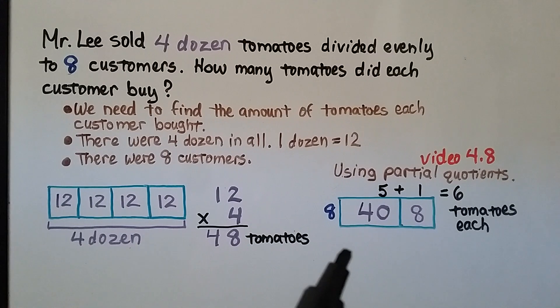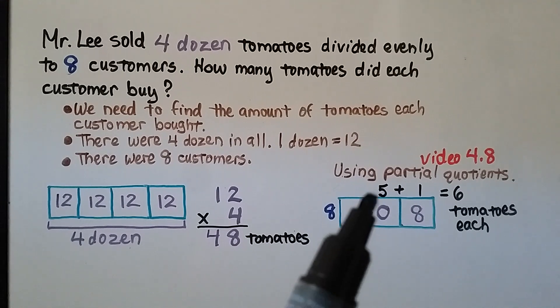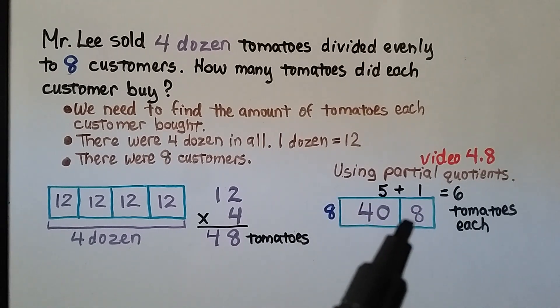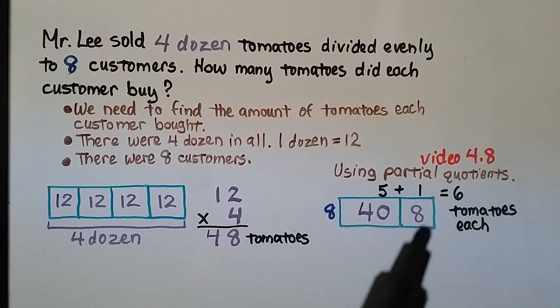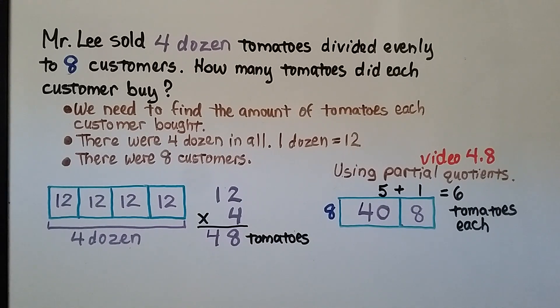Using partial quotients, we can break the 48 into a 40 plus 8. 8 goes into 40 five times, because 8 times 5 is 40. And 8 goes into 8 one time, because 8 times 1 is 8. And we add our partial quotients, 5 plus 1, that's equal to 6 tomatoes each. Each customer got 6 tomatoes.